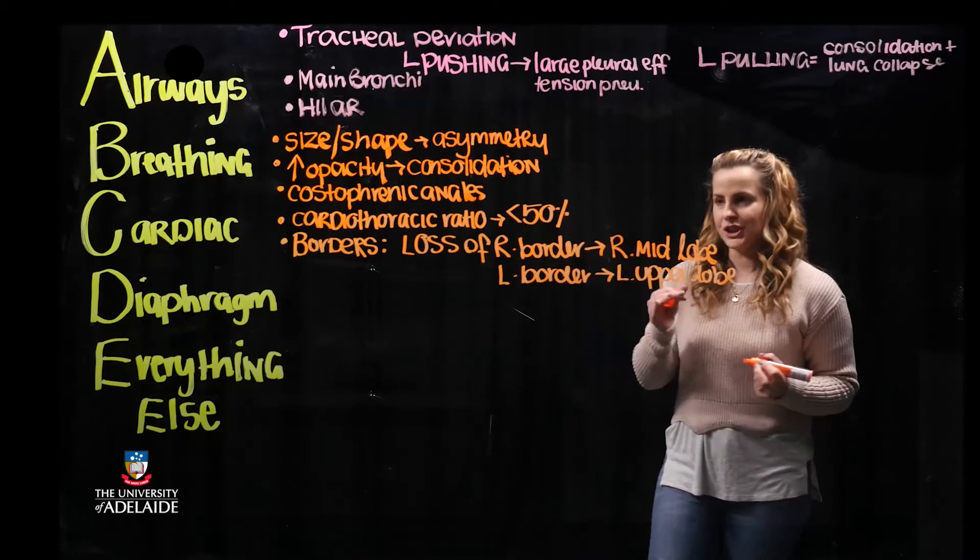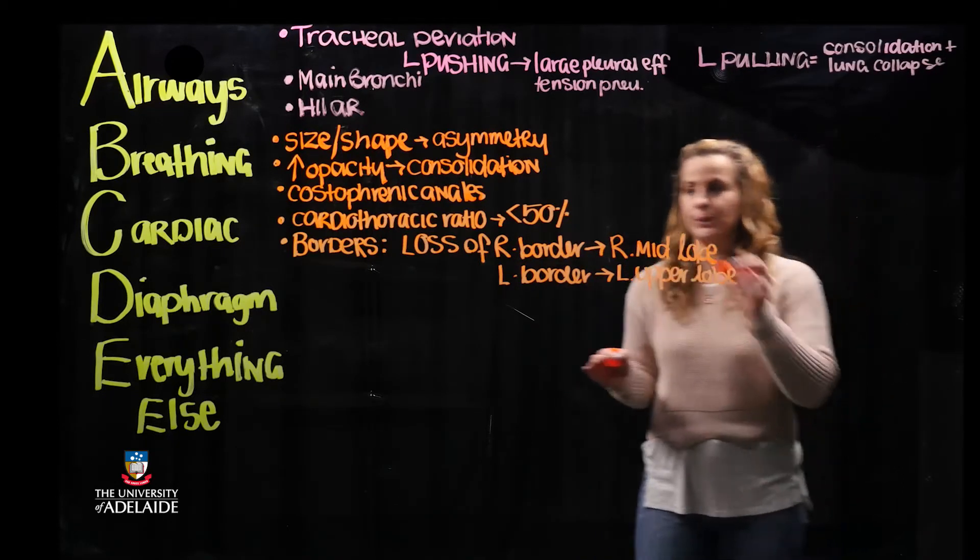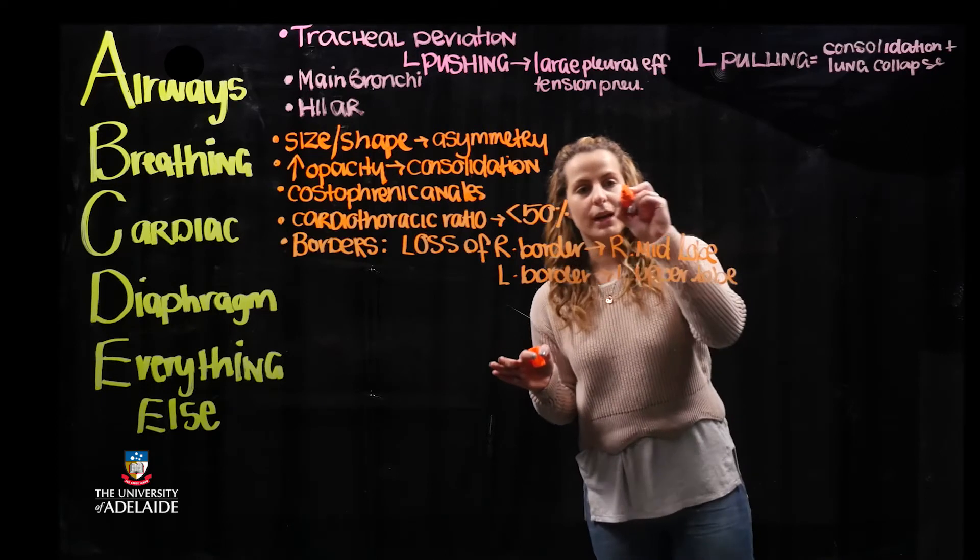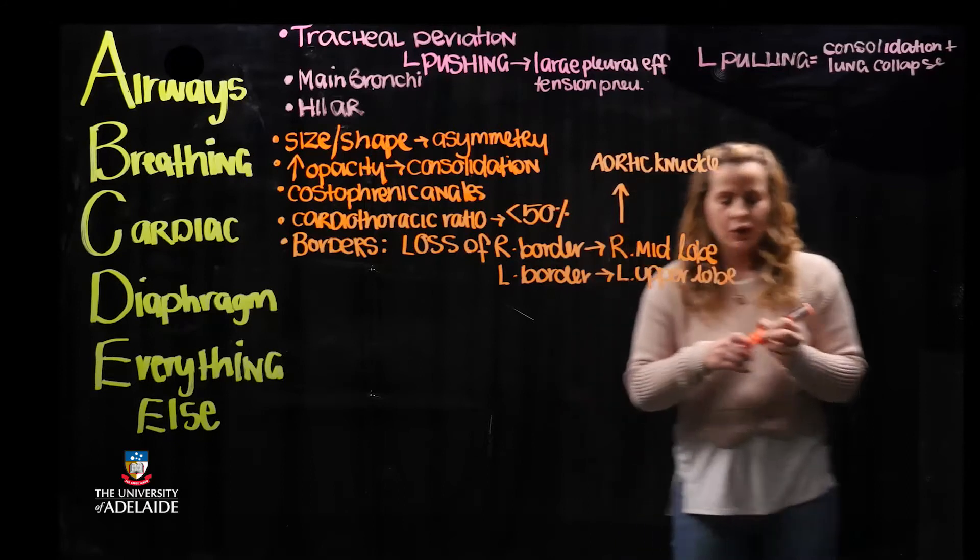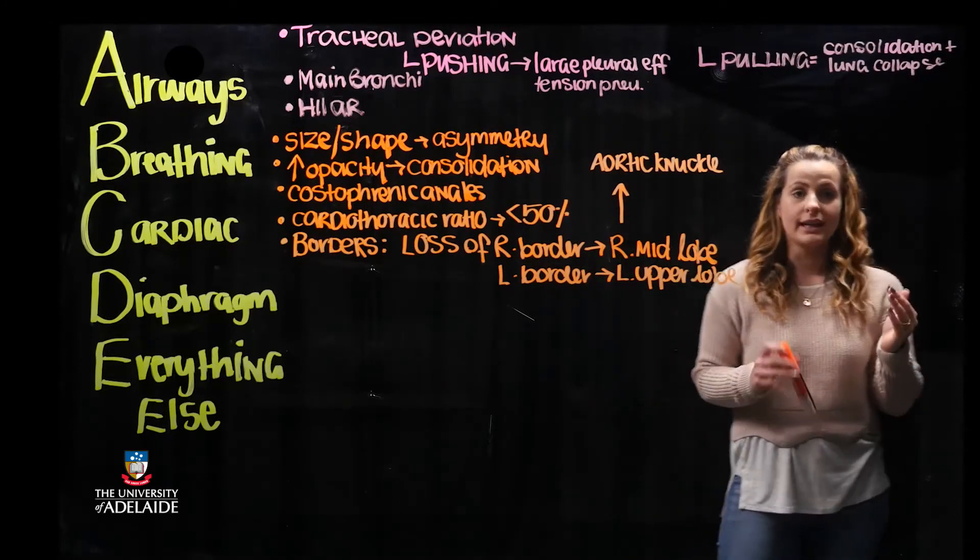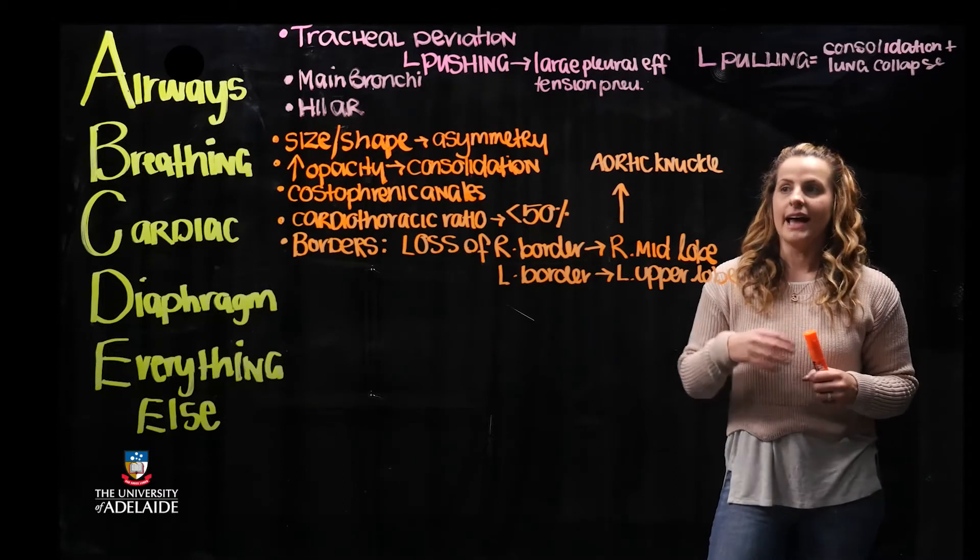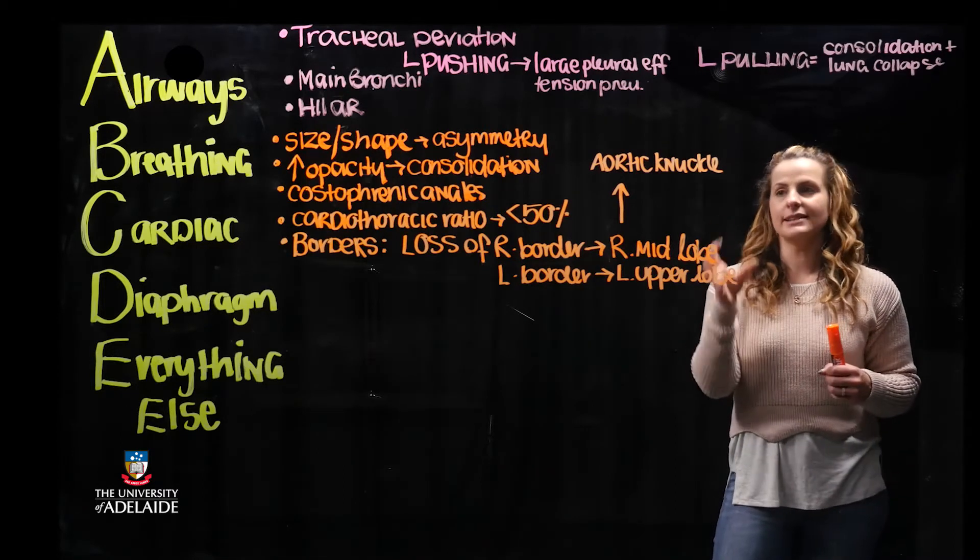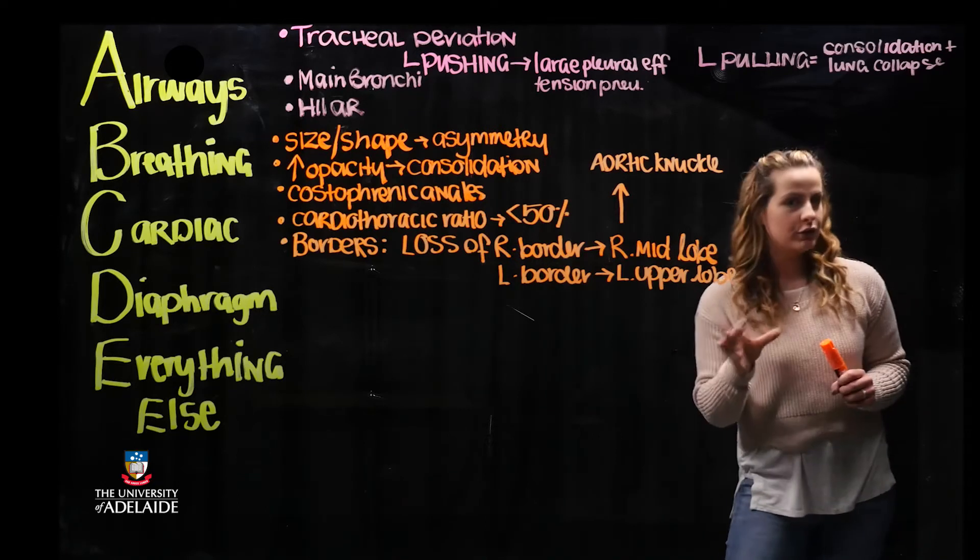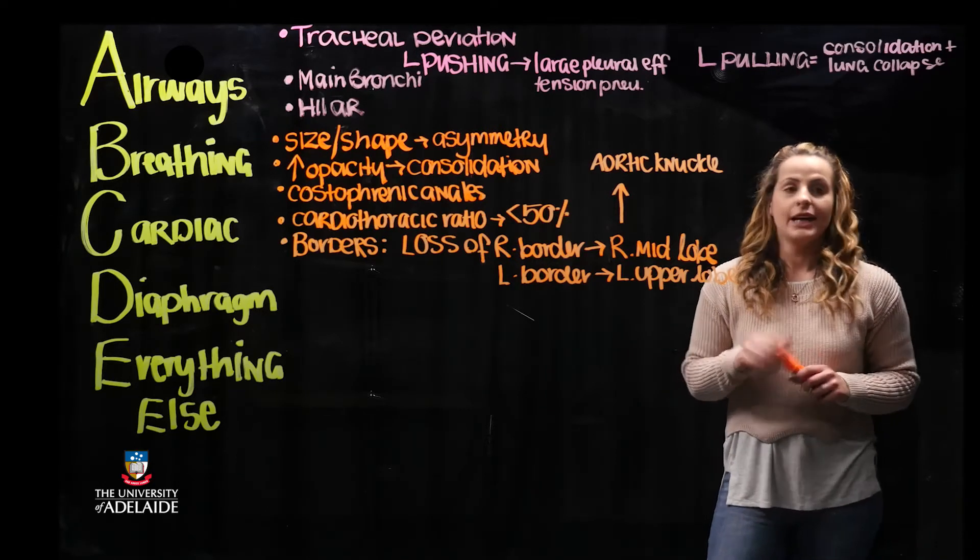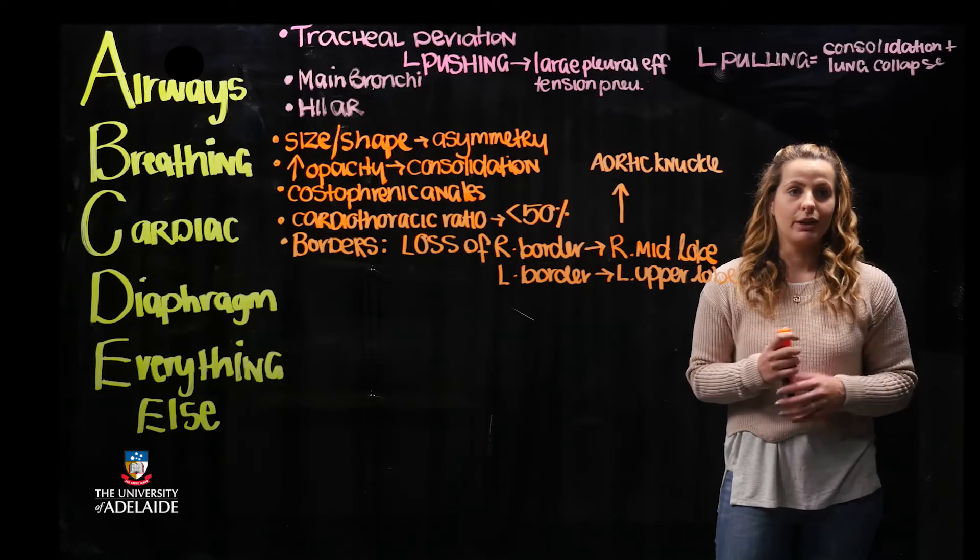Lastly, associated with the mediastinum is examining the aortic knuckle. We know that the aortic knuckle or the aorta passes posterior to the pulmonary vessels and shows a nice knuckle lateral protrusion on your X-ray. If you cannot visualize the aortic knuckle, it generally indicates that there is an aneurysm that may be prevalent in the aorta.